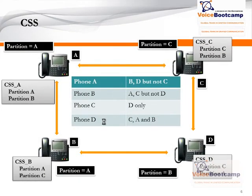Calling search space allows you to list a list of partitions in an order, and the order of partitions makes a difference as well. The partition on the top will be the first priority, then the partition on the second, and so on. In this example, phone A contains a CSS with two partitions in it: partition A and partition B. Because of this, phone A will be able to dial phone B.